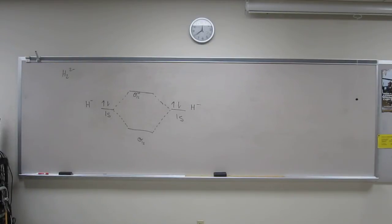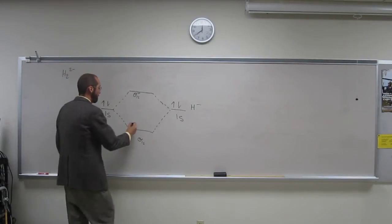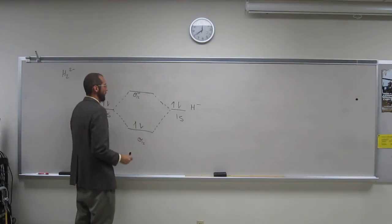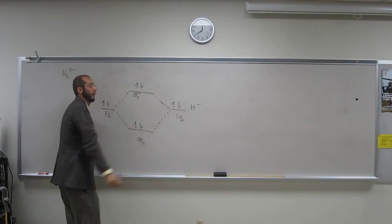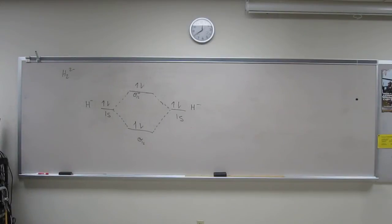And now we put them into our bonding and antibonding orbitals. So what we're really asking, does this molecule exist or not? So it'll go up like that, like that. So in order to figure out if it exists or not, how do we do that? And then figure out the bond order.